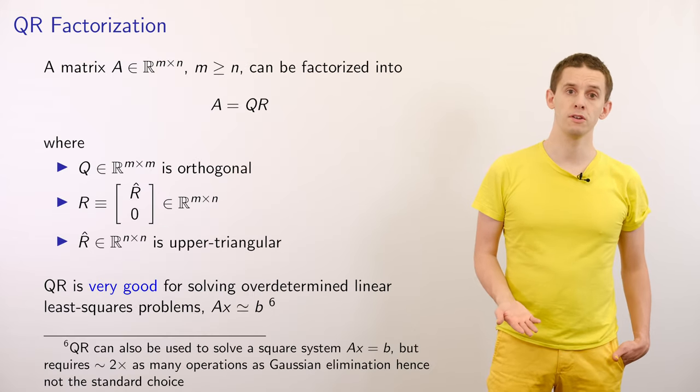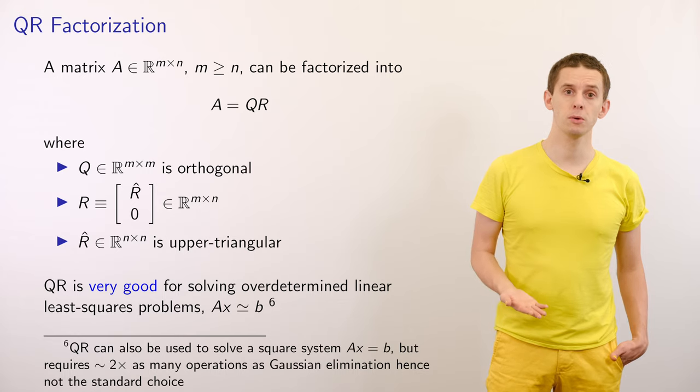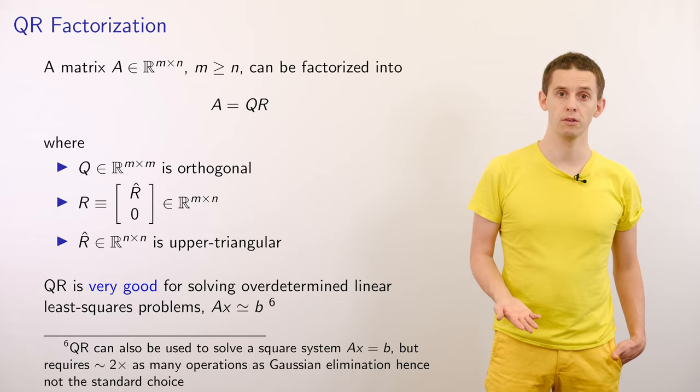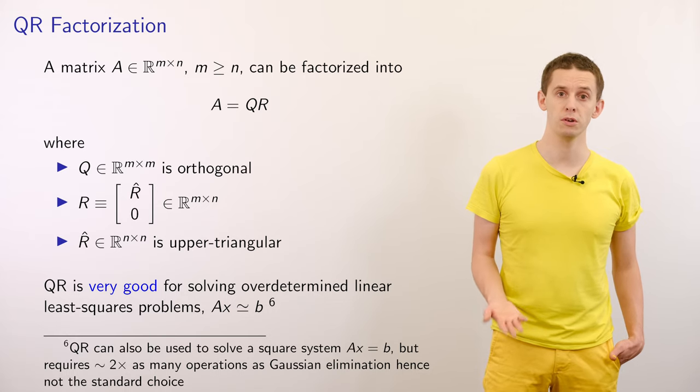We'll now look at the QR factorization. Suppose that we have a matrix A that is M by N, where M is greater than or equal to N. So this matrix has more rows than columns.